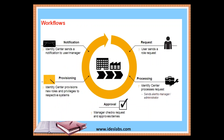Next, let's look at how workflow works in identity management. First we'll discuss step by step. We start with a request — a user sends a role request. Then in processing, the identity center processes the request by sending alerts to the manager or administration. Next is provisioning, where the identity center provisions new roles and privileges to the respective system. Then comes notification — the identity center sends a notification to the user or manager. Once that is done, it goes to approval, where the manager checks the request and approves it.